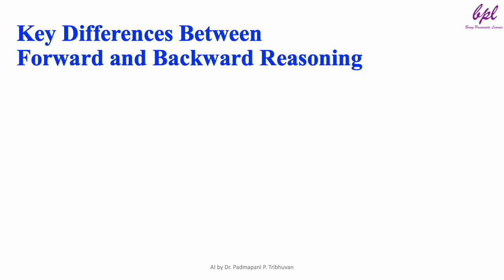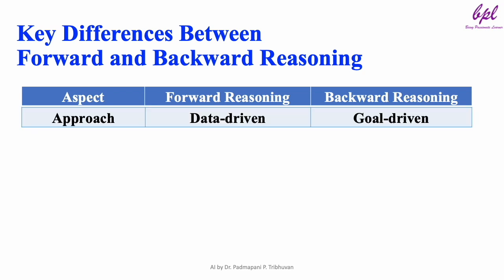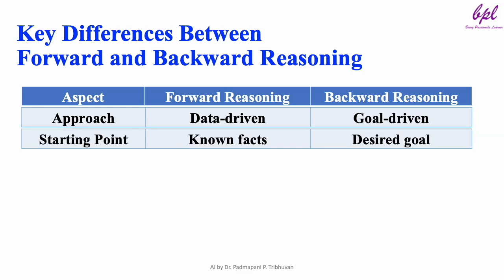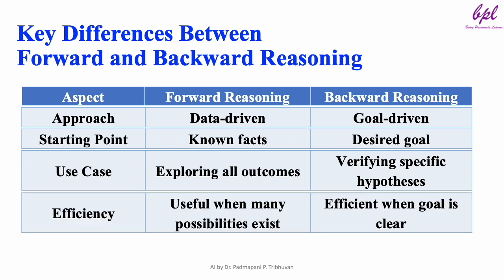Key differences: Let's see how forward and backward reasoning differ across four aspects. First, approach: forward reasoning is data-driven, while backward reasoning is goal-driven. Second, starting point: forward reasoning starts with facts, while backward reasoning begins with the goal. Third, use case: forward reasoning is great for exploring possibilities, while backward reasoning is ideal for targeted problem solving. Fourth, efficiency: forward reasoning is more computationally extensive, whereas backward reasoning is more efficient for clear goals. Both methods are valuable and are chosen based on the problem context.